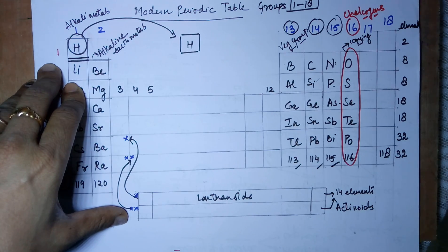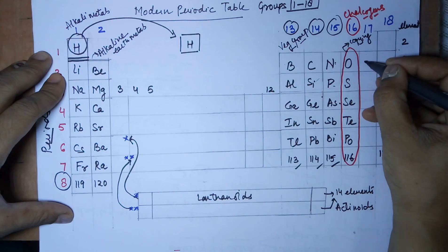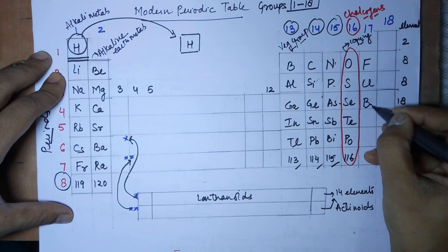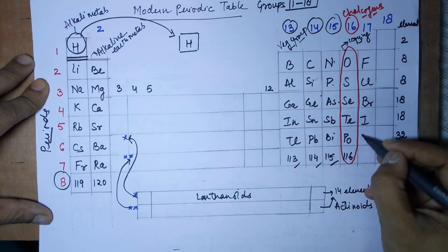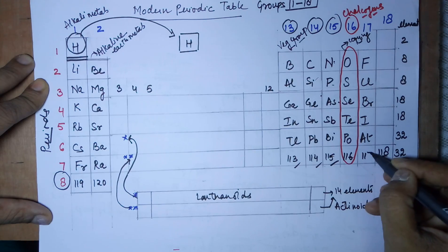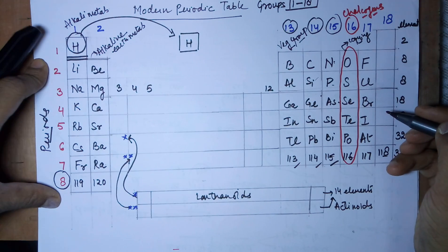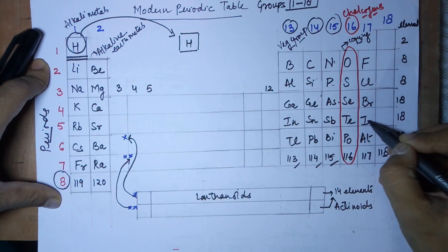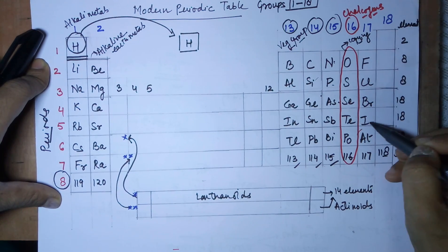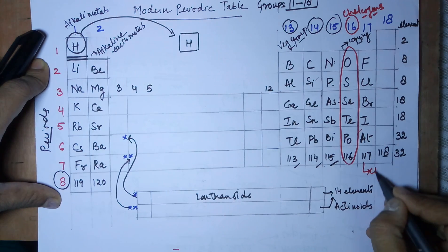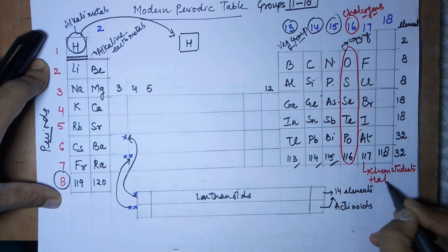Group number 17 members are fluorine, chlorine, bromine, iodine, and astatine — the last radioactive member, with element 117 being the last. I call this the 'full color brightness in an atom' group for chemistry students. This group is also called the halogens.